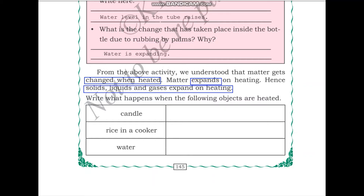What happens to a candle when it melts? It melts when it is heated. Next, if you keep rice in a cooker and heat the cooker, what happens to the rice? The rice gets cooked. When the rice gets cooked, it becomes soft — the hard rice grains become soft cooked rice.